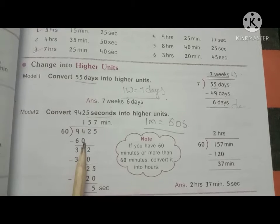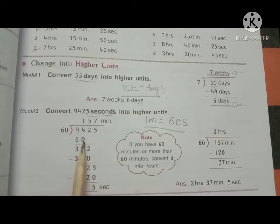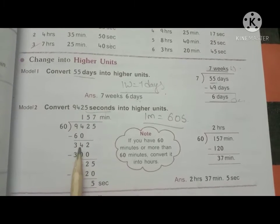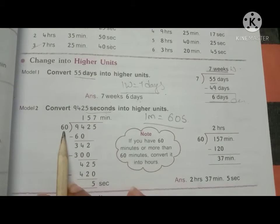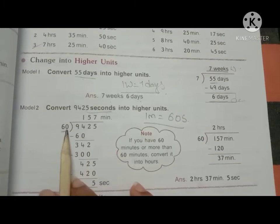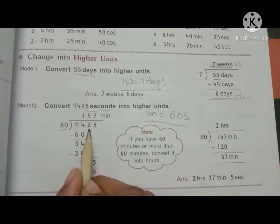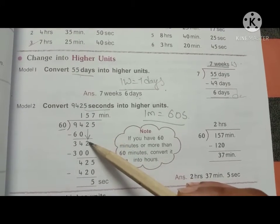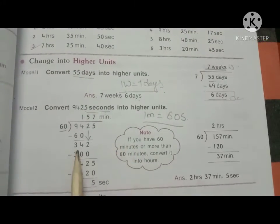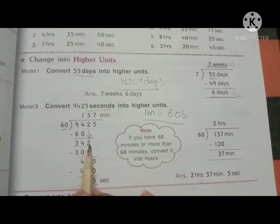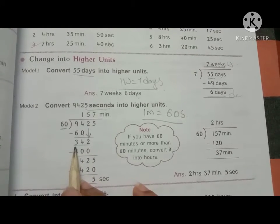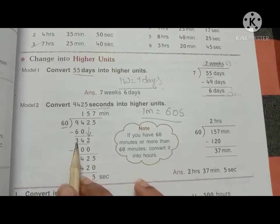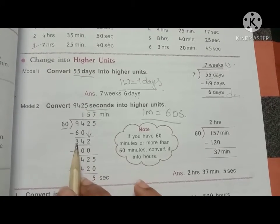We divide 9,425 by 60. 60 times 1 is 60. Subtract: 4 minus 0 is 4, 9 minus 6 is 3. We get 34, which is smaller than 60, so we bring down the next digit, 2, making it 342. The nearest multiple of 60 in 342 is 300 — that is 60 times 5. So we subtract: 2 minus 0 is 2, 4 minus 0 is 4, 3 minus 3 is 0. We now have 42 remaining.